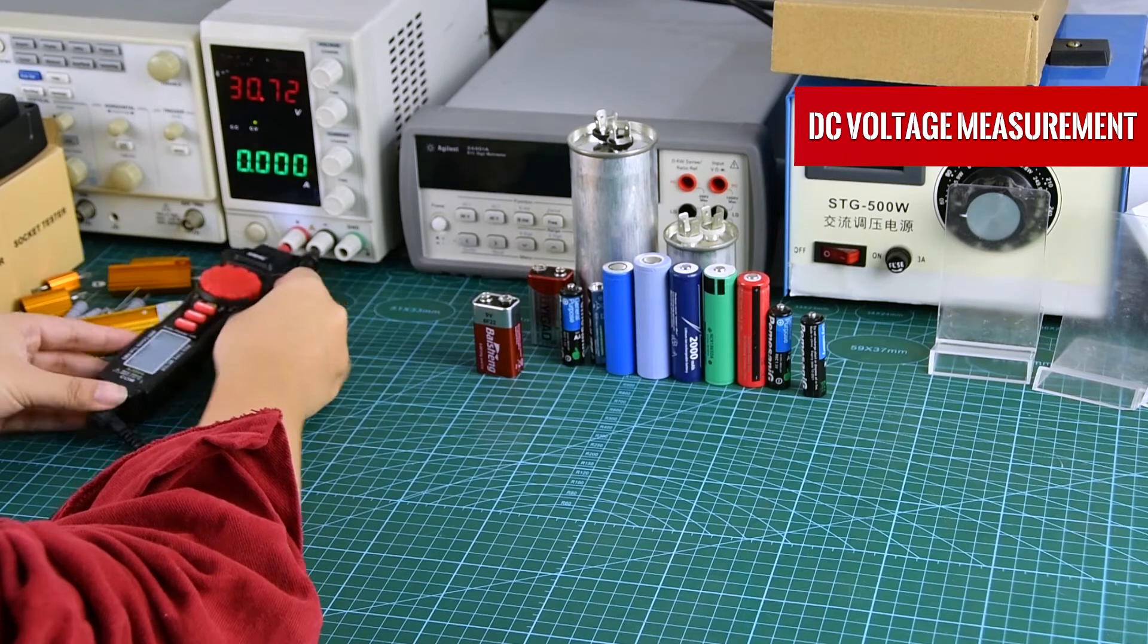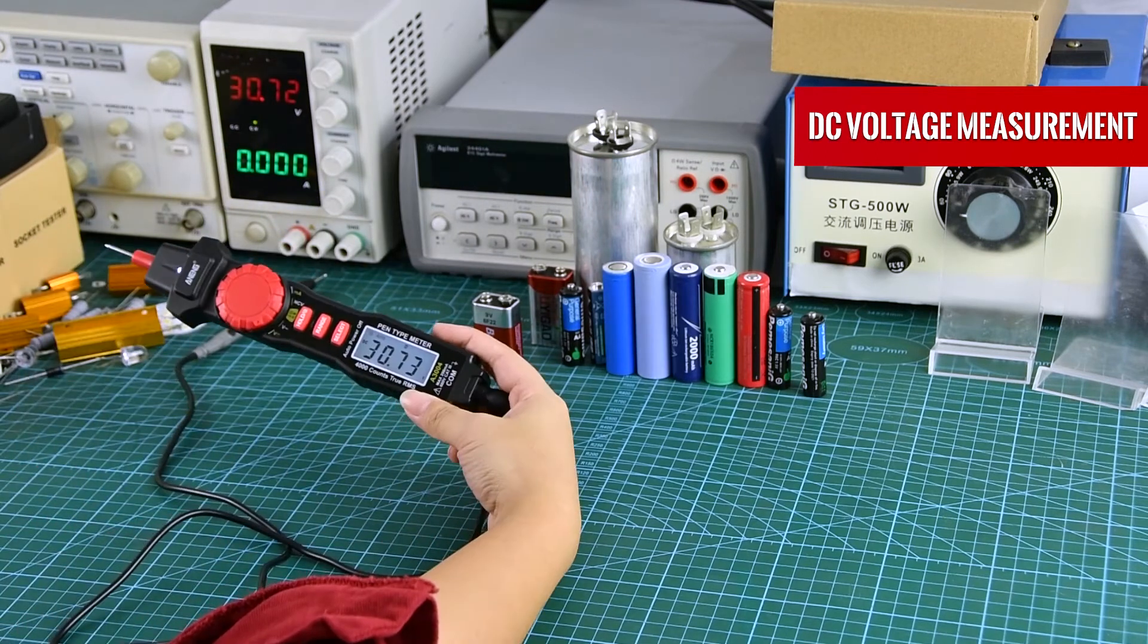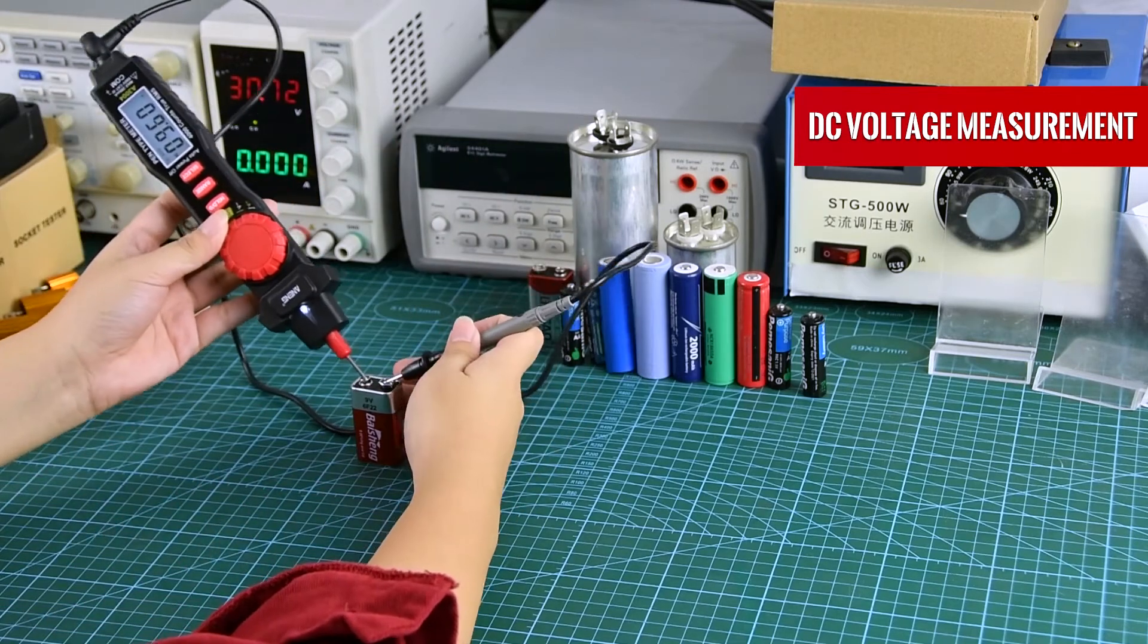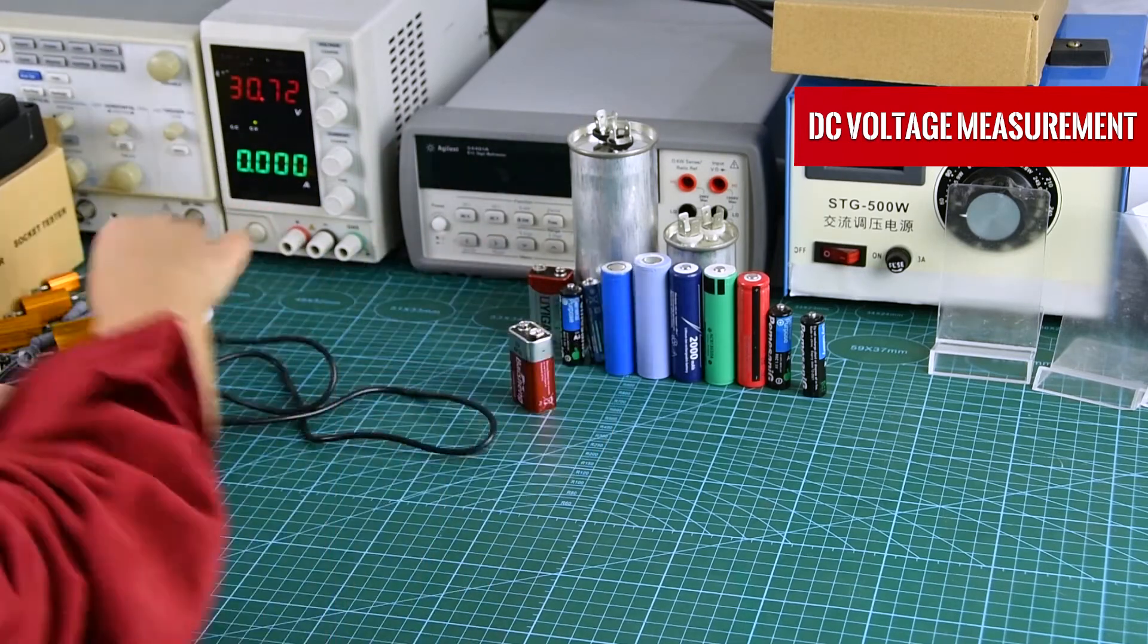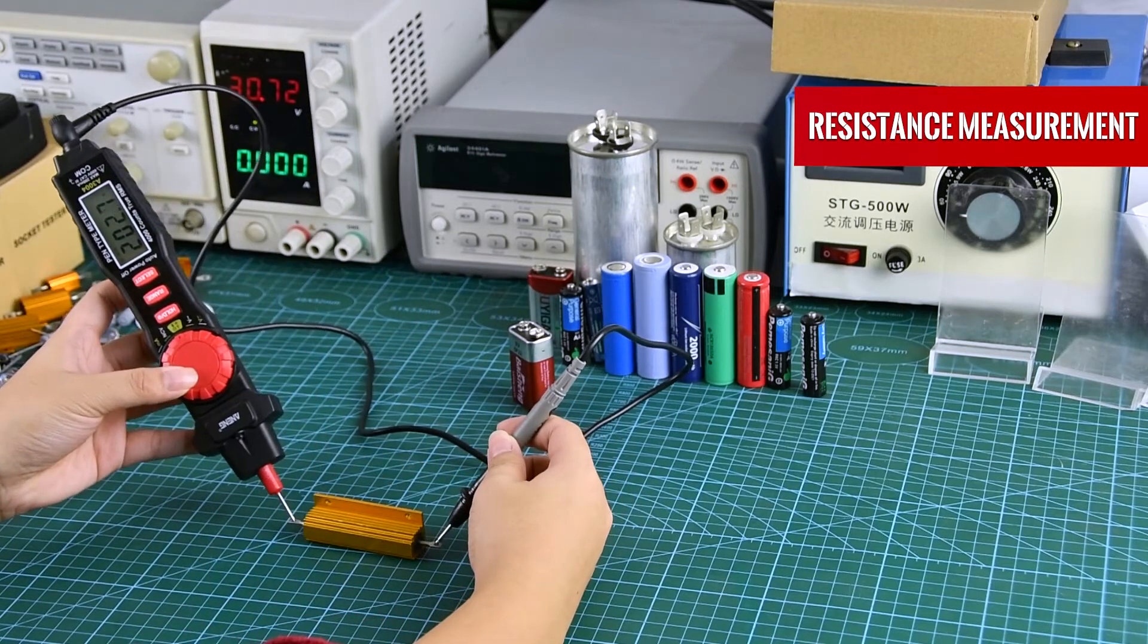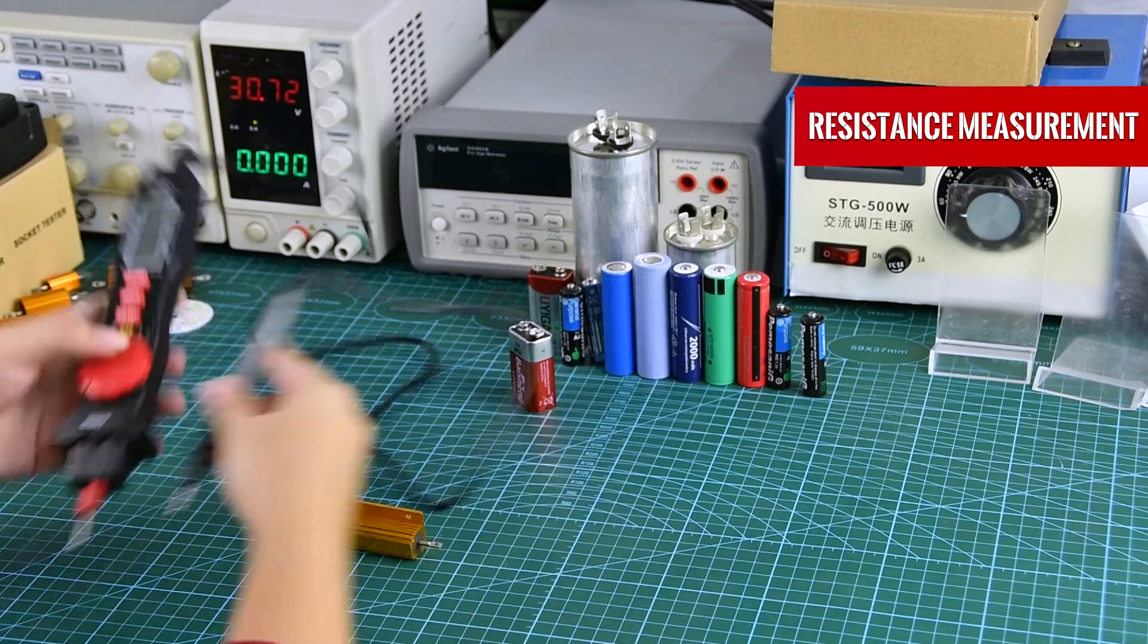DC Voltage Measurement. Resistance measurement: place the stylus on both sides to measure.